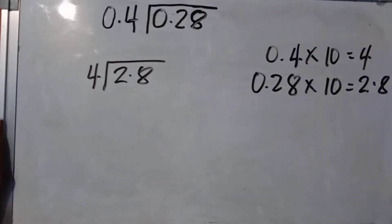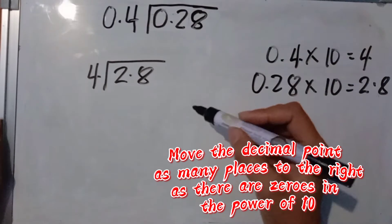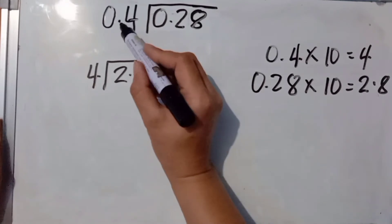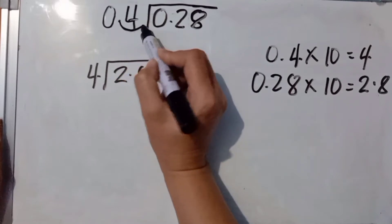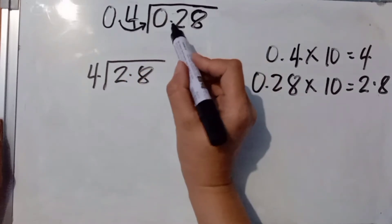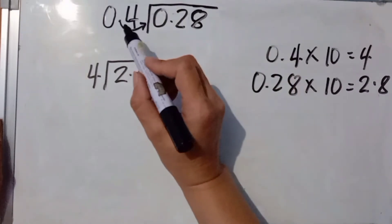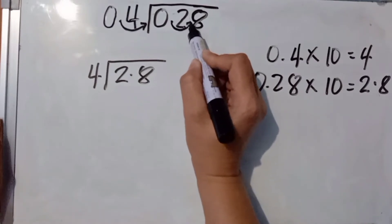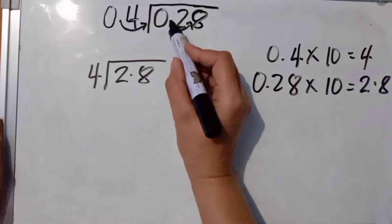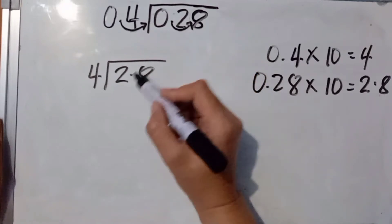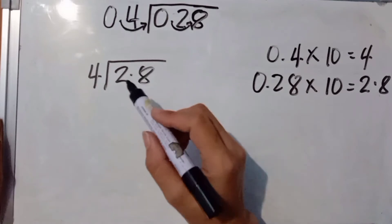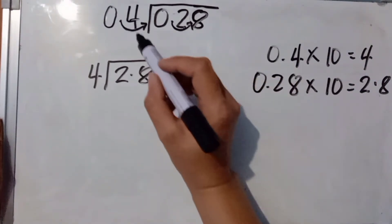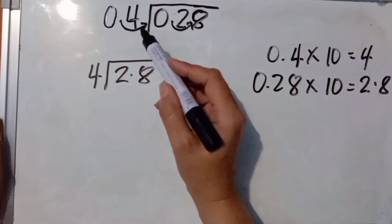There's a shortcut for this. We are just going to move the decimal point to the right. For 4 tenths, move one decimal place to the right to make it a whole number. The same is done for the dividend — move one decimal place to the right. So the decimal point moves between 2 and 8, making it 2.8. There's no need to multiply by the power of 10; just move the decimal point to the right for both divisor and dividend.